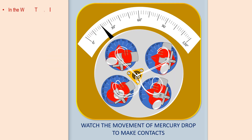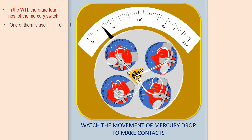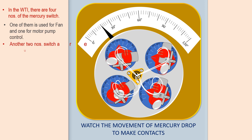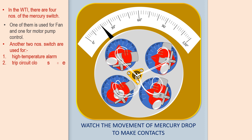In the WTI, there are four numbers of mercury switches. One of them is used for fan control and one for motor pump control. Another two switches are used for high temperature alarm and trip circuit close contact.